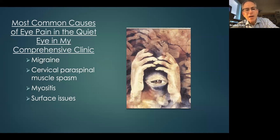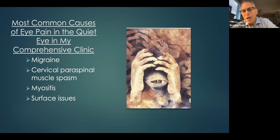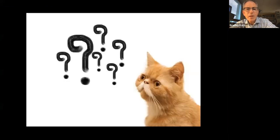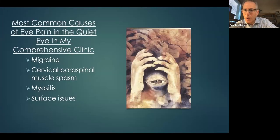In my comprehensive eye clinic, from my personal experience, the most common cause is migraine, and I think that's because of the wiring of the trigeminal nerve. I also see a fair number of people with cervical paraspinal muscle spasm from a whiplash injury that have referred pain into their eye. Way out in third place is myositis and surface issues like dry eye and blepharitis — and that's in people with a quiet eye.